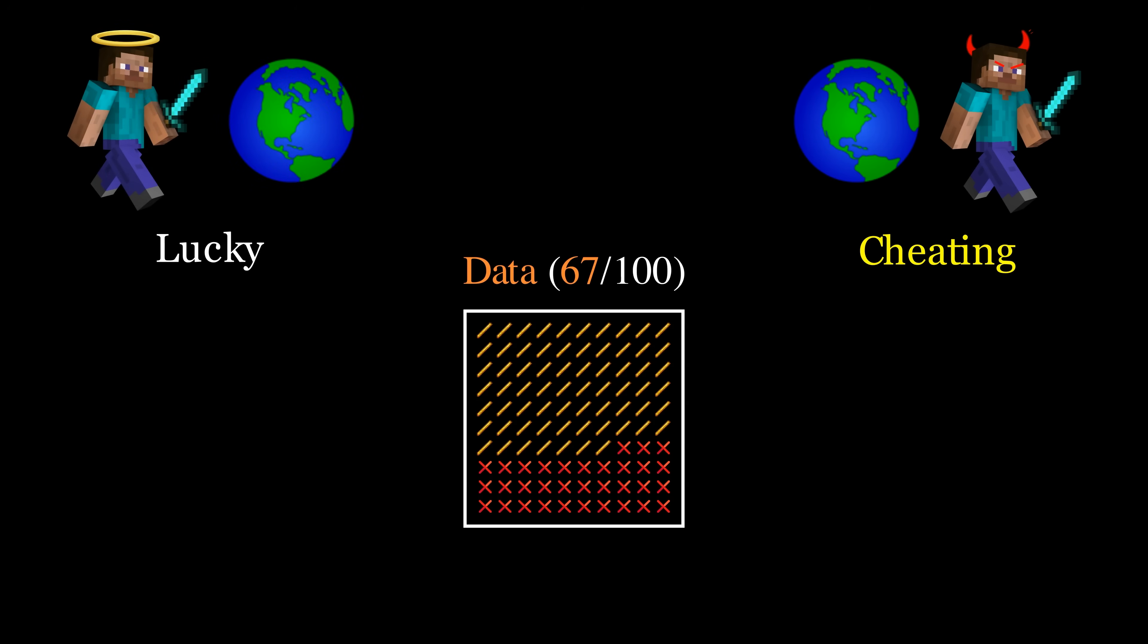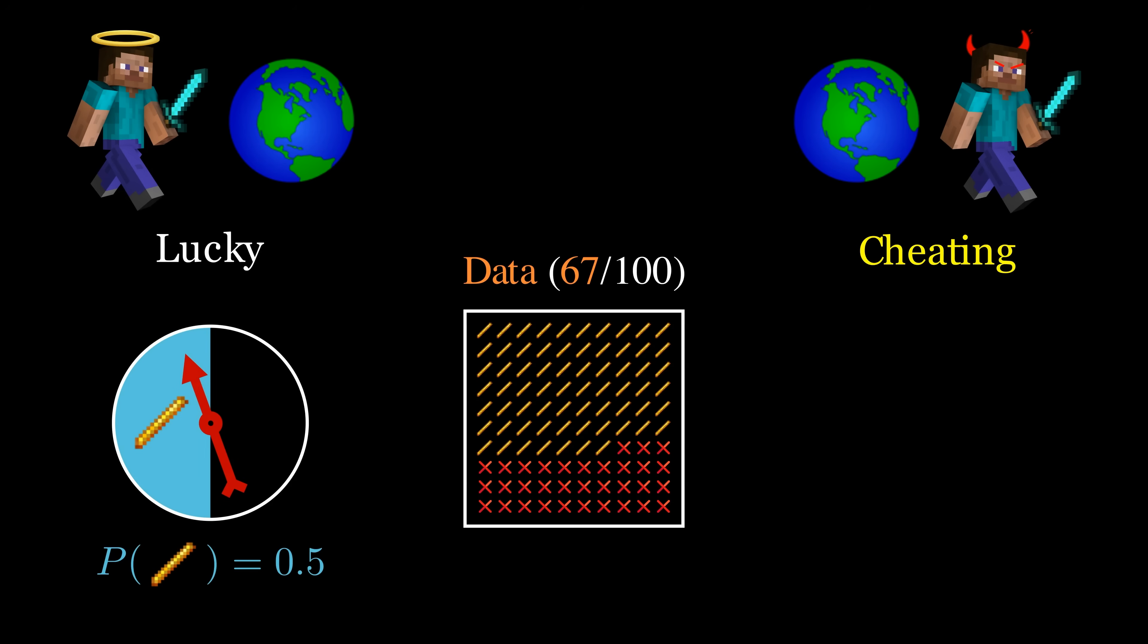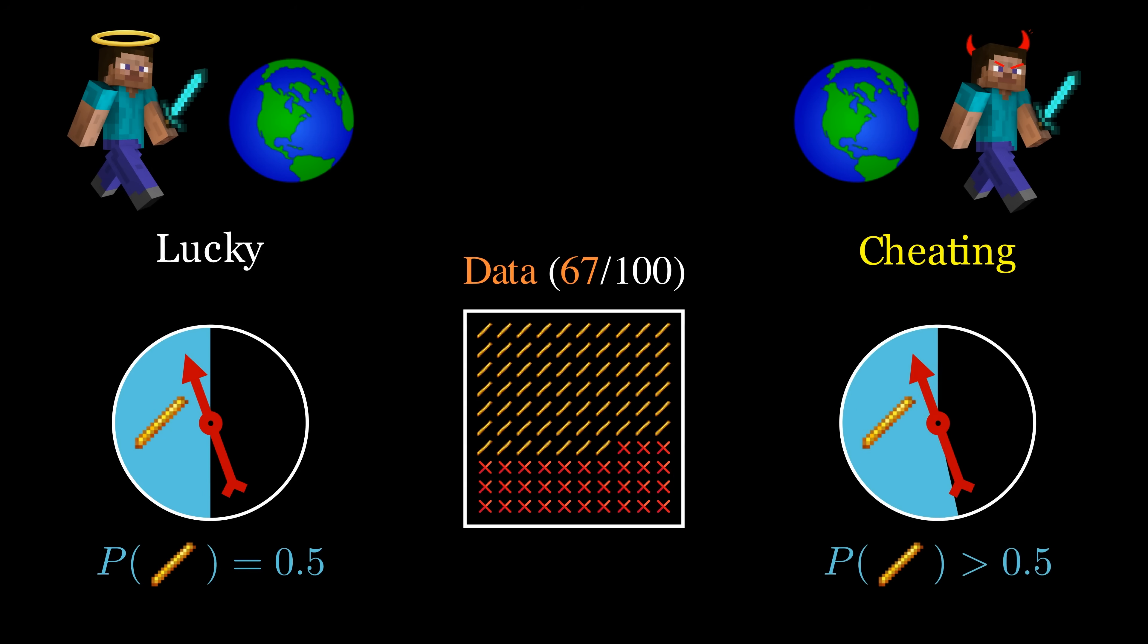In each of these worlds, we can come up with a probabilistic model of how our data was generated. In the lucky world, the probability of getting a blaze rod is exactly 50%. In the cheating world, our friend modified the probability to be greater than 50%.